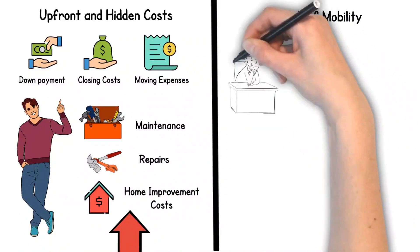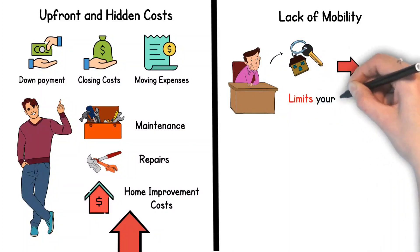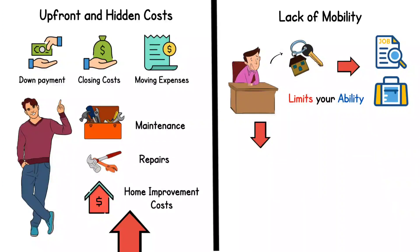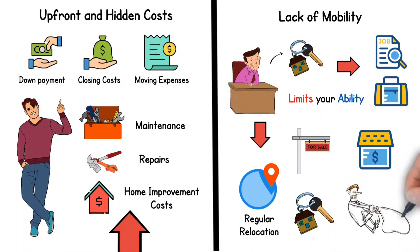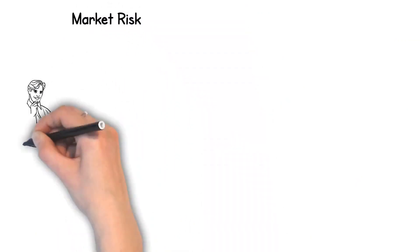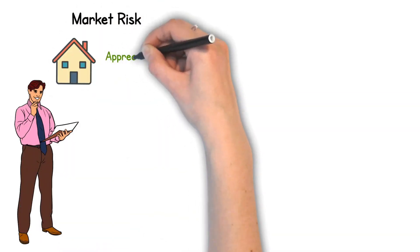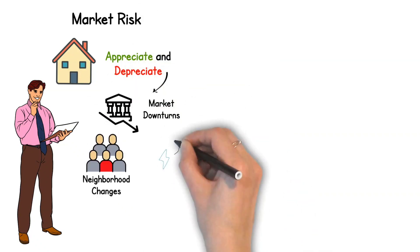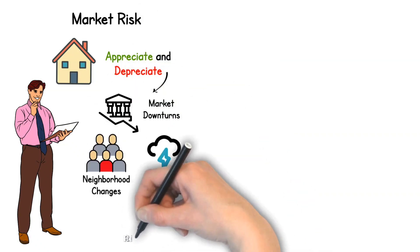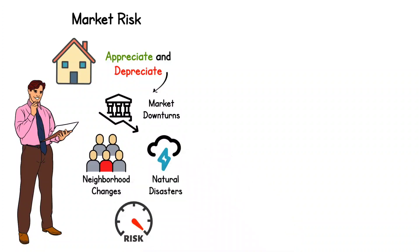Lack of mobility. While owning a home provides stability, it also limits your ability to move freely for job opportunities or lifestyle changes. If you're in a stage of life where you foresee many changes or have a career that requires regular relocation, the process of selling a home and buying a new one could be cumbersome and expensive. Market risk. Though homes often appreciate over time, they can also depreciate due to factors like market downturns, neighborhood changes, or natural disasters. Homeowners bear the brunt of these risks.